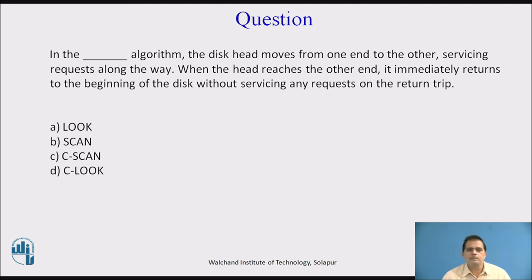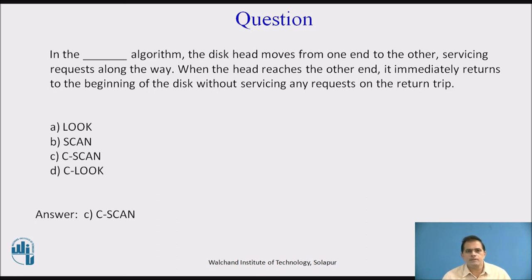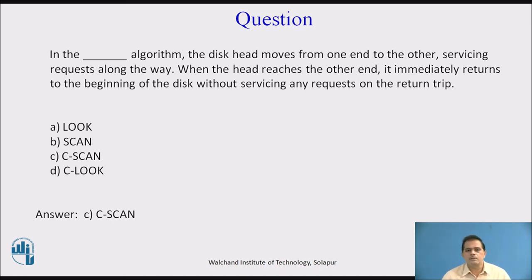The answer is C-Scan. In the C-Scan algorithm, the disk head moves from one end to the other servicing requests along the way. When the head reaches the other end, it immediately returns to the beginning of the disk without servicing any request on the return trip. As we saw in the previous slide, from the end we move to zero with no service given to any request, and from that beginning we move again in the right direction giving service to requests. So the answer is C-Scan.